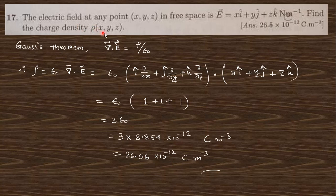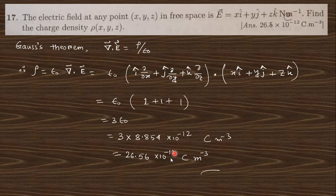Question 17: given the electric field at any point, find the charge density. Gauss's theorem in differential form states ∇·E = ρ/ε₀, so ρ = ε₀(∇·E). Computing the divergence of the given E and multiplying by ε₀ gives the answer.